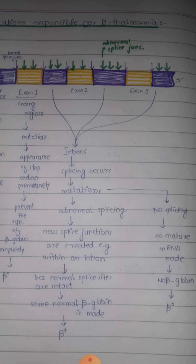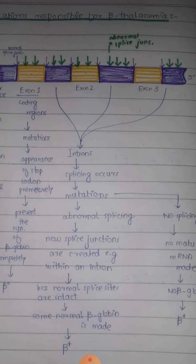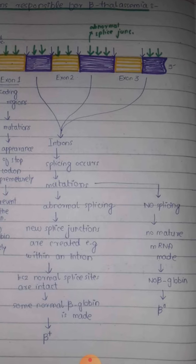Third, there can be abnormal splice junctions. Normally splicing removes introns, but mutations can cause abnormal splicing. The normal splice junctions sit between exons and introns, shown here as blue arrows. Abnormal splice junctions (green) can occur within the intron or within the exon. When some splice junctions are at normal positions and some are abnormal, some beta globin chains are still made — beta-plus. But if there is no splicing at all, no mature mRNA is made and no beta globin chains form — beta-zero.